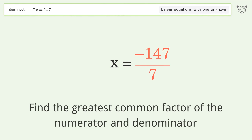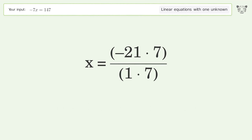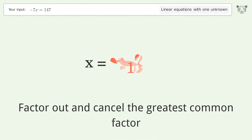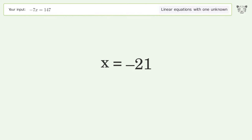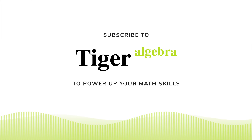Find the greatest common factor of the numerator and denominator, then factor out and cancel it. The final result is x equals negative 1.